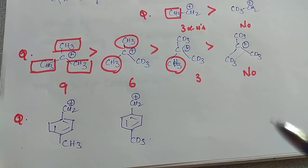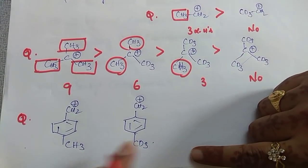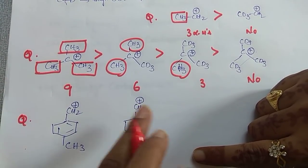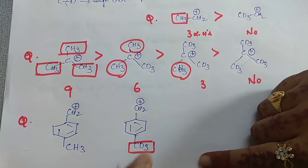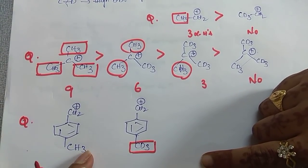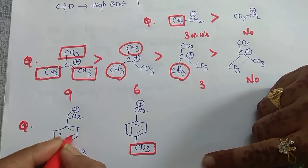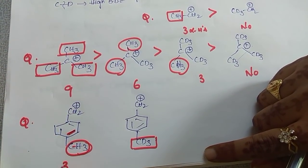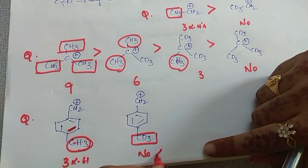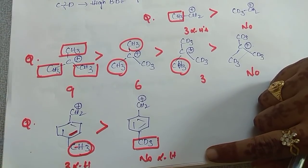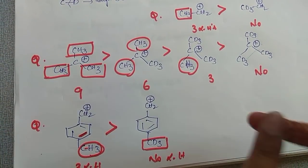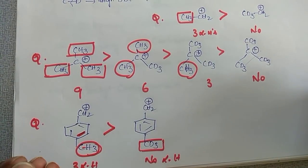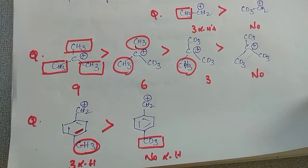Another question: between CH₃ and CD₃ attached to an alkene system, which structure is more stable? You might say CD₃ is a better releasing group and stabilizes the carbocation — but here, hyperconjugation is possible because the sp3 carbon is in conjugation with the pi bond. The CH₃ group has 3 alpha hydrogens; the CD₃ group has no effective alpha hydrogens for hyperconjugation. So structure 1 (CH₃) is more stable than structure 2 (CD₃). Remember: if only inductive effect, prioritize deuterium; if hyperconjugation is possible, prioritize the CH₃ group.